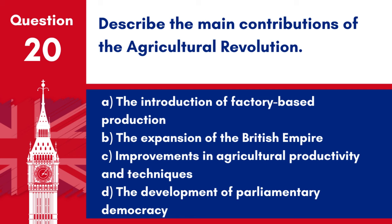Question 20. Describe the main contributions of the agricultural revolution. a. The introduction of factory-based production. b. The expansion of the British Empire. c. Improvements in agricultural productivity and techniques. d. The development of parliamentary democracy. Answer: c. The agricultural revolution contributed significant improvements in agricultural productivity and techniques.